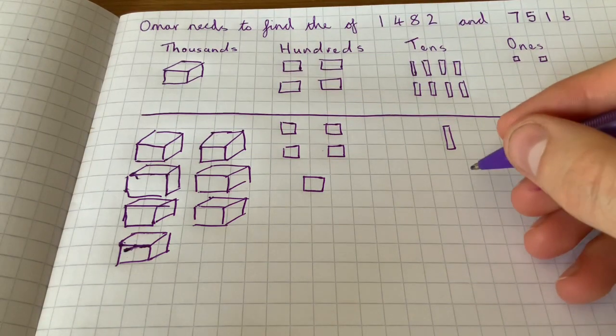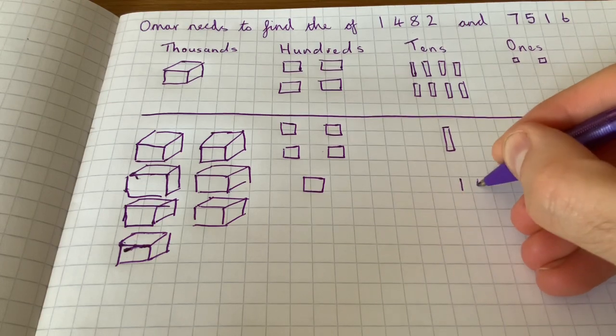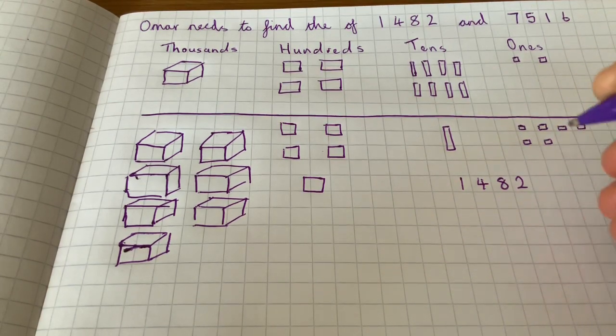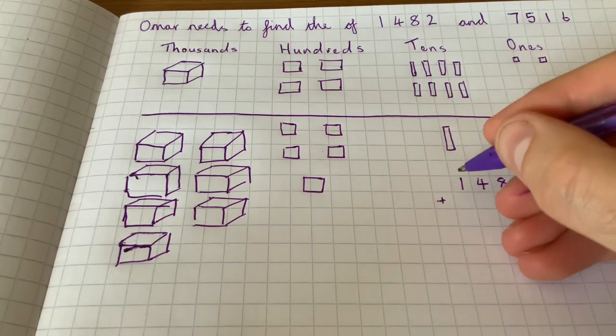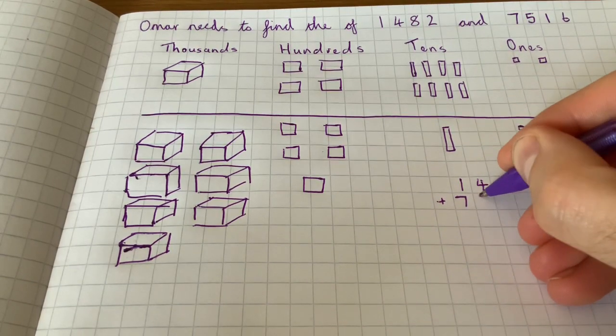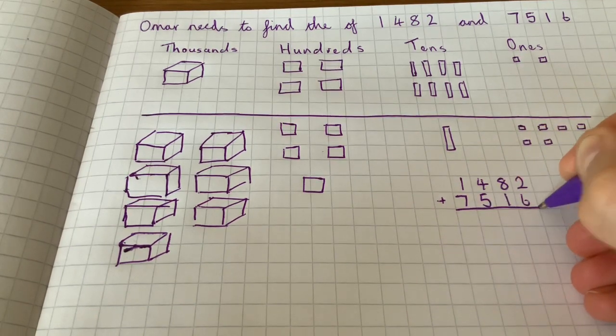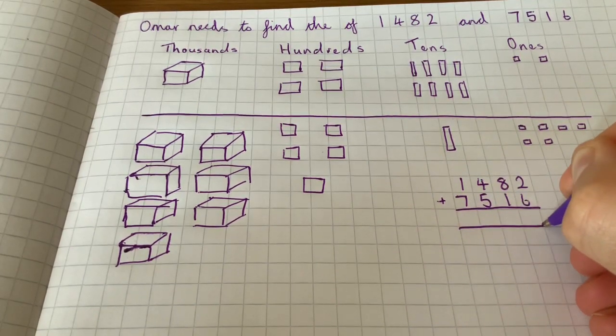So we can still represent this in column addition. It's 1,482 add 7,516, like this. Obviously in school we'd use a ruler.